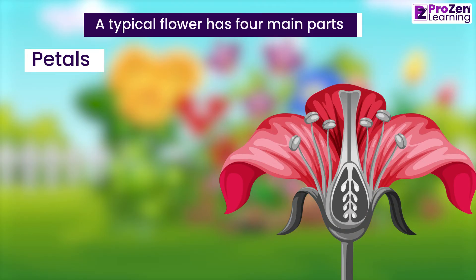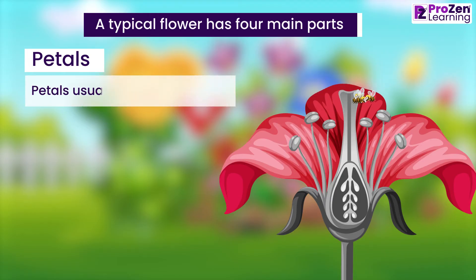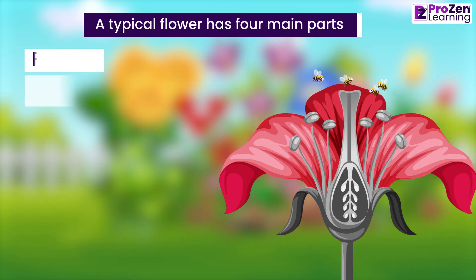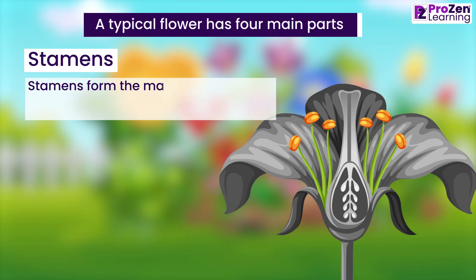Petals are either colored or white and are seen only when the flower blooms. They usually attract insects. Stamens form the male reproductive parts of a flower.